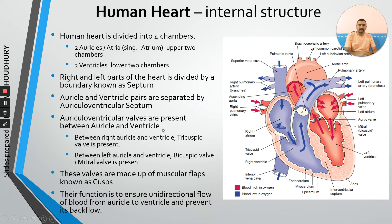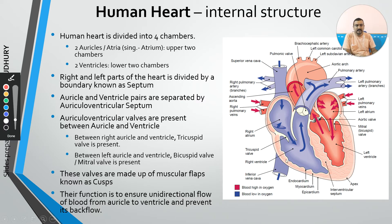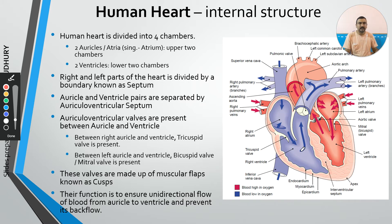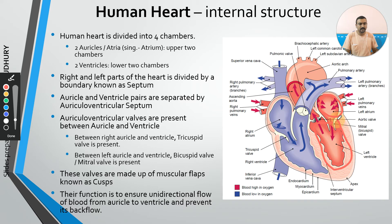Inside the heart, there are four chambers. We can divide the heart into two halves — right half and left half — separated by a boundary called the septum. In each half, there is an upper chamber known as the atrium (also called auricle) and a lower chamber known as the ventricle. So there is a right atrium, right ventricle, left atrium, and left ventricle — four chambers in total.